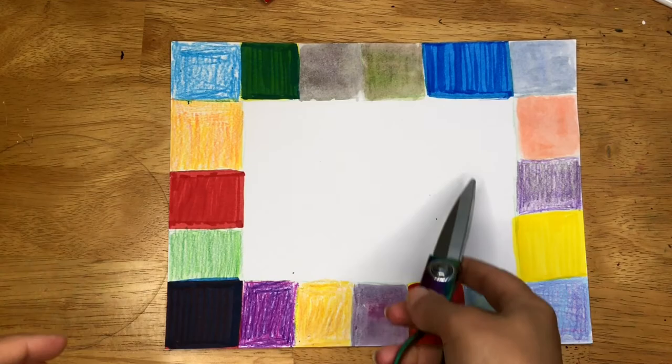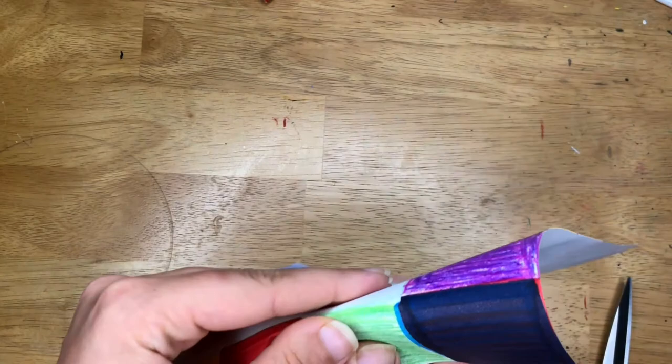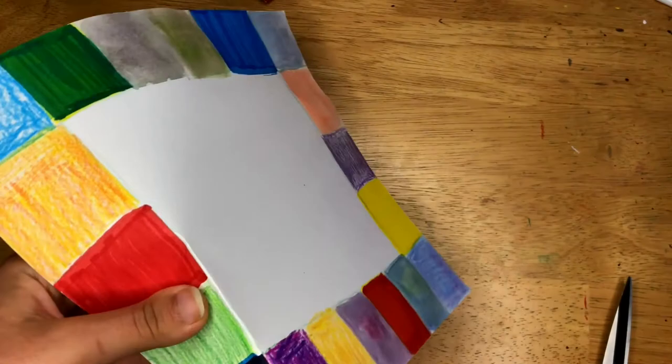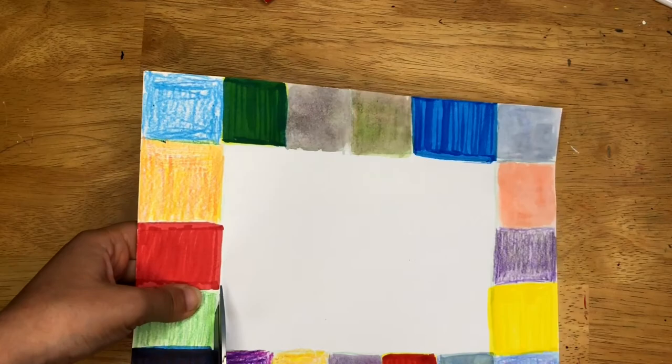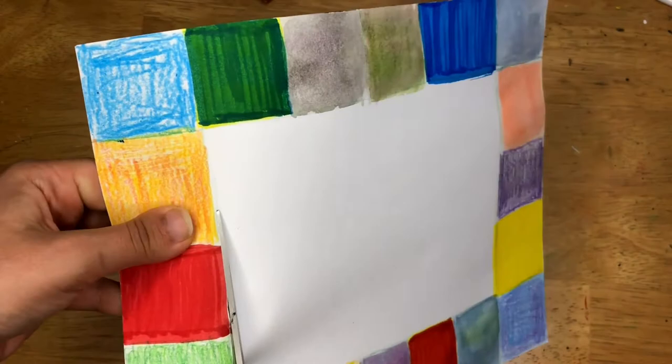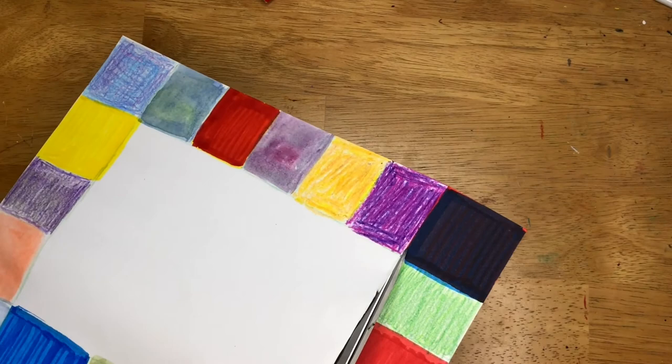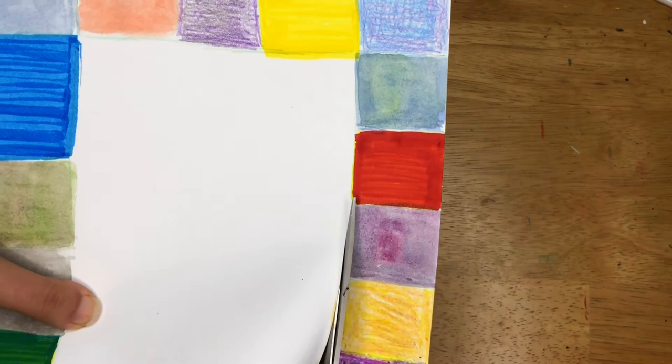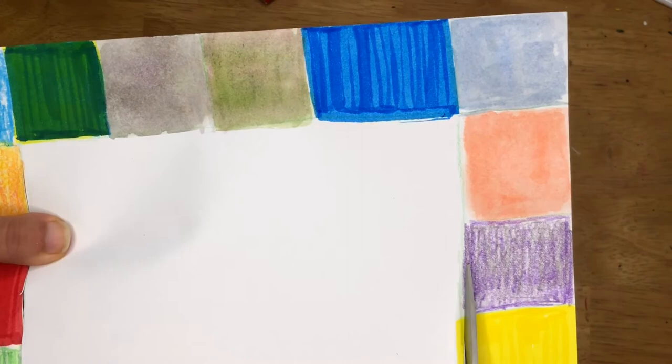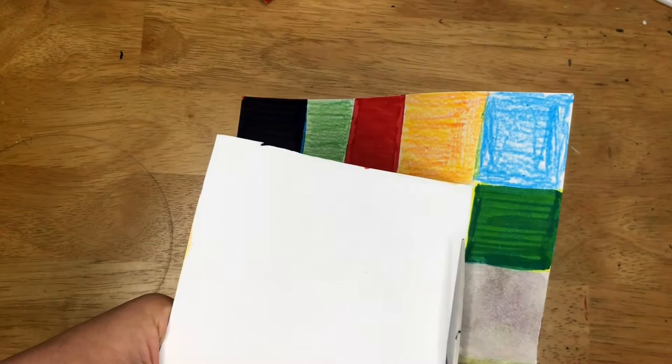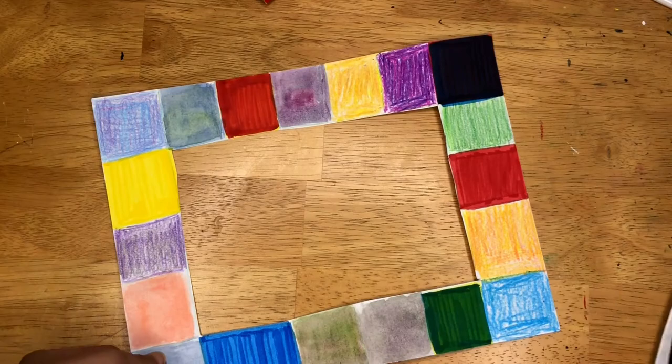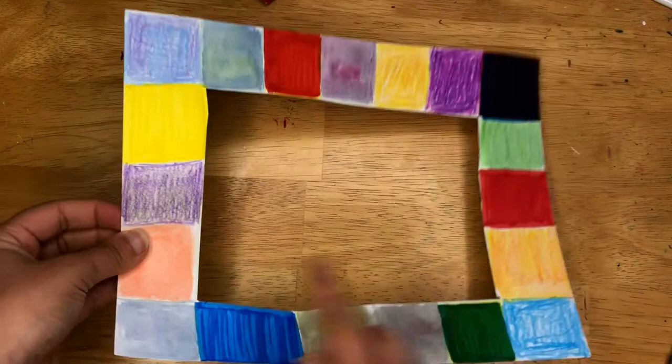The last thing we're going to do is we're going to cut out this rectangle. Now an easy way to do that is you can give a little bit of a fold along that edge. I want to save this middle part because I can do a drawing on there. And I can go ahead and poke a hole right there. And now I can go ahead and cut that out. There we go. Save this for later. And here is my color viewfinder. Now I can go take this anywhere outside and try to see which color I see represented around my house.